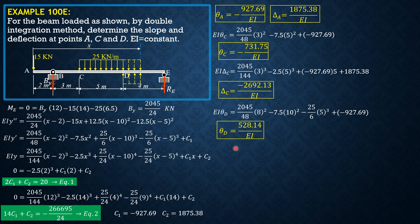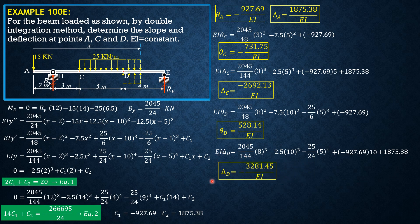Finally for delta D, X is 10. So EI delta D is 2045 over 144 times 8 cubed minus 2.5 times 10 cubed minus 25 over 24 times 5 to the fourth plus negative 927.69 times 10 plus 1875.38. So delta D equals negative 3281.45 over EI. I hope you were able to follow the solution. Thank you.